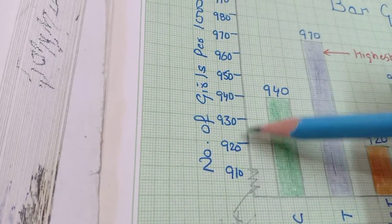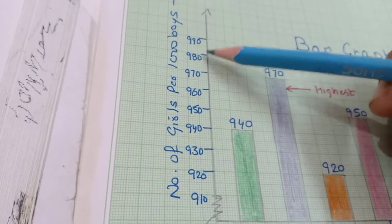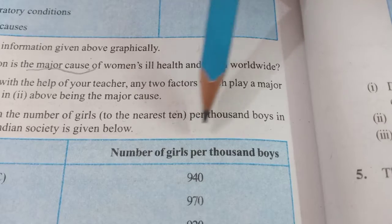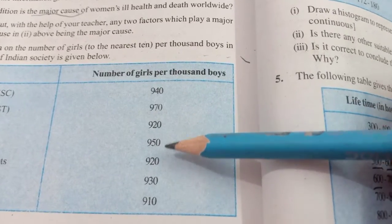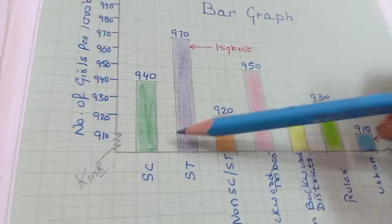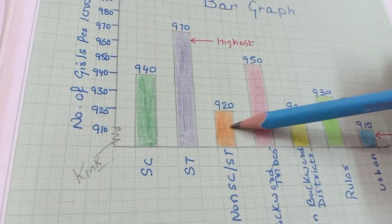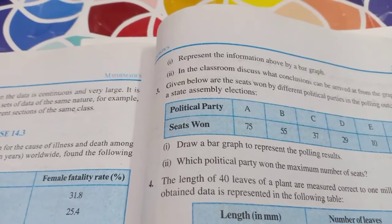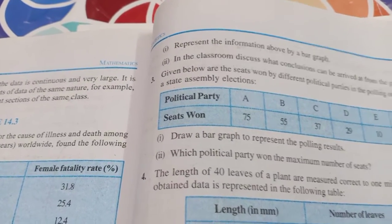910 से आगे 11 cm का gap लेकर हमने 970 तक data allot कर लिया। Y-axis पर number of girls per thousand boys show कर रहे हैं। अब हम bars बनाते हैं: 940, फिर 970, 920, 950, 920, 930, 910 — same length of bars depend करी। सबसे highest bar यह बन रही है और सबसे lowest bar यह बन रही है। हमने bar graph बना लिया।